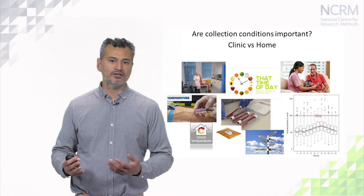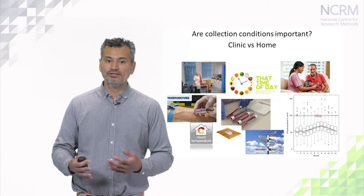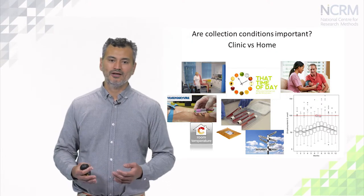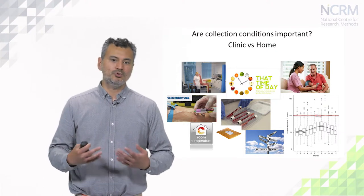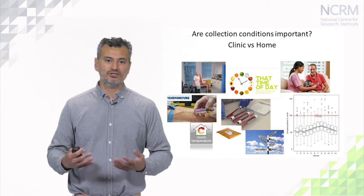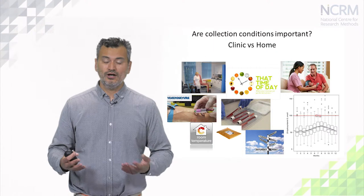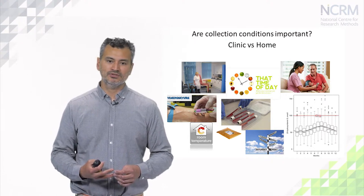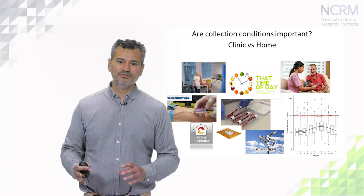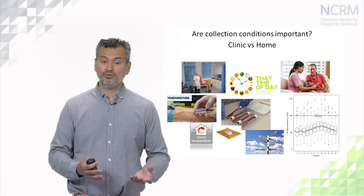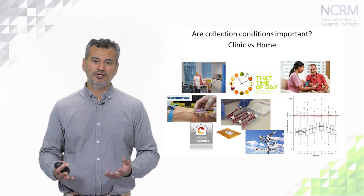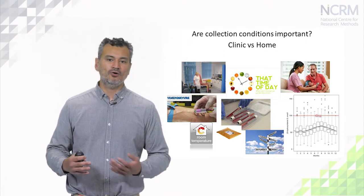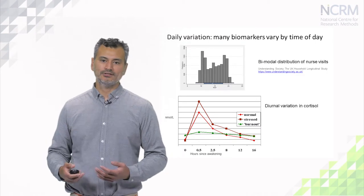Blood samples taken by the nurse in a home visit are usually stored in particular ways and can be sent by post, for example in a jiffy bag. The environmental conditions to which these blood samples are then exposed are quite different from the clinic situation where blood samples are stored immediately in freezers. The bottom right-hand part of the slide shows other conditions affecting both home visits and clinic collections — whether it's a weekday or weekend, or what month of the year — all of these factors do tend to affect some blood-based biomarkers.